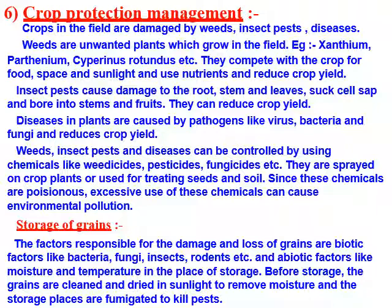The last step is storage of grains. Factors responsible for damage and loss of grains include biotic factors like bacteria, fungi, insects, and rodents, as well as abiotic factors like moisture, temperature in the storage place, and rain. Before storage, grains are cleaned and dried in sunlight to remove moisture, and storage places are fumigated to kill pests.